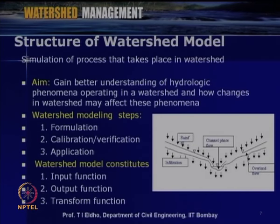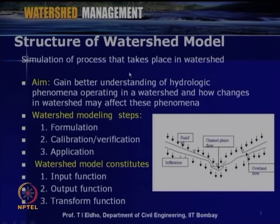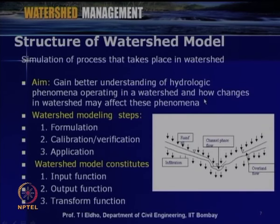So, we can classify watershed models into black box models, lumped models, and distributed models. When we develop a watershed model, the aim is to gain better understanding of hydrologic phenomena operating in a watershed and how changes in watershed may affect these phenomena — for example, for a given rainfall how the runoff will take place, or once we adopt soil conservation or water harvesting measures, what will be their impact.